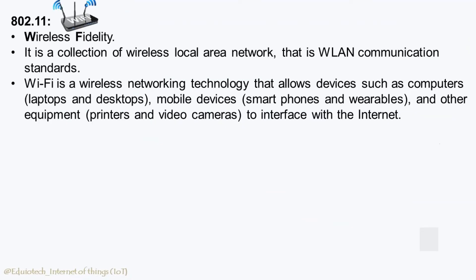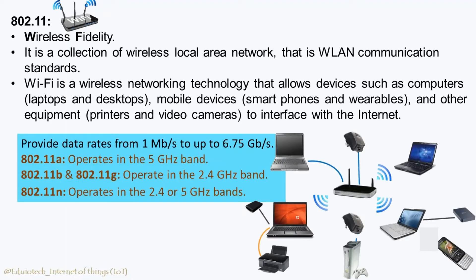Wi-Fi is a wireless networking technology that allows devices such as computers, laptops and desktops, mobile devices including smartphones and wearables, and other equipment such as printers and video cameras to interface with the internet. These standards provide data rates from 1 Mbps to up to 6.75 Gbps. For example, 802.11a operates in the 5 GHz band; 802.11b and 802.11g operate in the 2.4 GHz band; 802.11n operates in the 2.4 or 5 GHz bands.